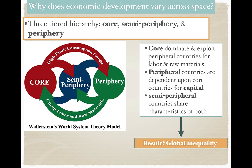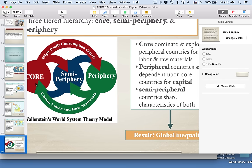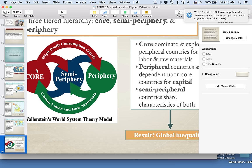There's a three-tiered hierarchy. Core countries dominate and exploit peripheral countries for labor and raw materials. Core countries utilize the cheap labor and raw materials of the periphery countries — taking raw materials and bringing them to the core, where they manufacture high-profit consumption goods. The core benefits from the cheap labor and raw materials of the periphery and is able to create high-tech industries and high-tech jobs. In essence, the core can create a tertiary economy because the periphery provides the resources and raw material.